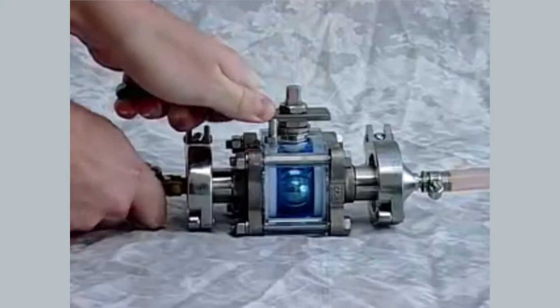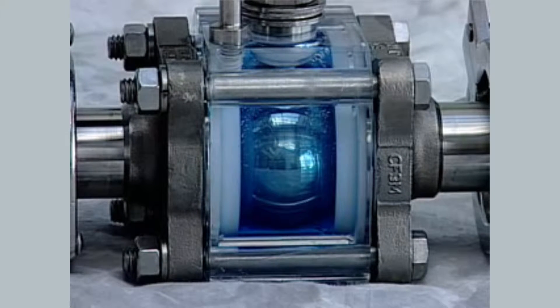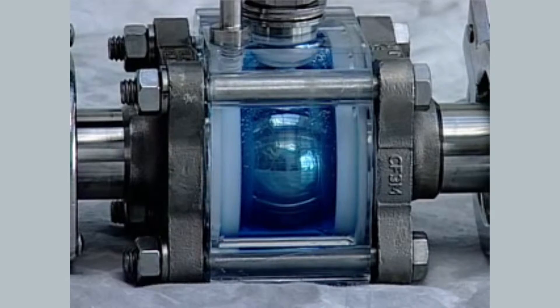Notice how the valve internals of a typical on-off ball valve are not cleaned with the process line flush. Some detergent remains in the valve body.